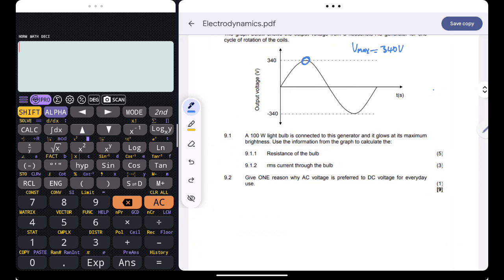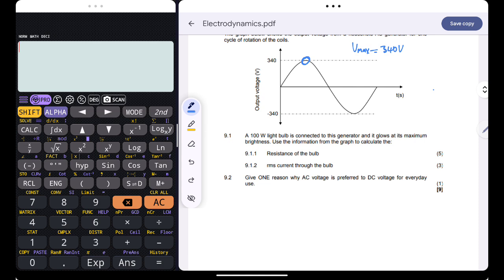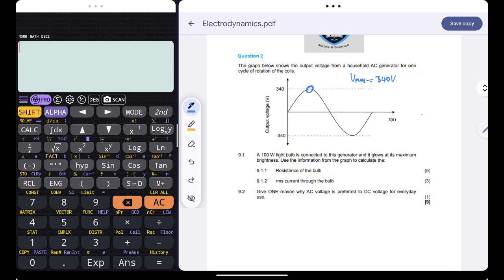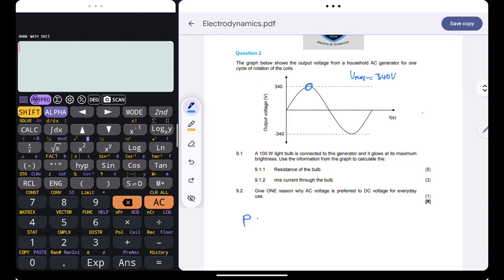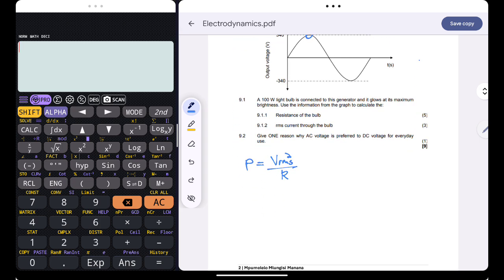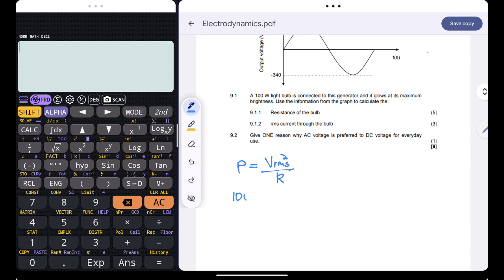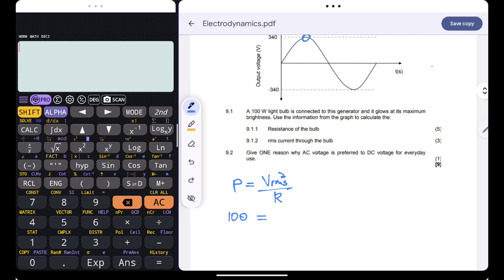A 100 watt light bulb is connected to this generator and glows at its maximum brightness. Use the information from the graph to calculate the resistance of the bulb. I know that guys, power, by the way these formulas are given to you at the back of your formula sheet, power is just equal to V_rms squared all over R. We are given the value of power, power is just 100 watts, but we do not have V_rms, we only have V_max.